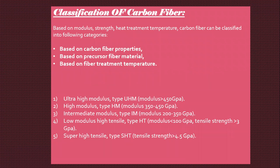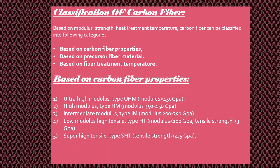Next is classification of carbon fibers. Based on modulus, strength, and heat treatment temperature, carbon fiber can be classified into the following categories: based on carbon fiber properties, based on precursor fiber material, and based on fiber treatment temperature. Based on carbon fiber properties: Ultra High Modulus type (UHM), modulus greater than 450 GPa; High Modulus type (HM), modulus 350 to 450 GPa; Intermediate Modulus type (IM), modulus 200 to 350 GPa; Low Modulus High Tensile type (HT), modulus 100 GPa tensile strength; and Super High Tensile type (SHT), tensile strength greater than 4.5 GPa.